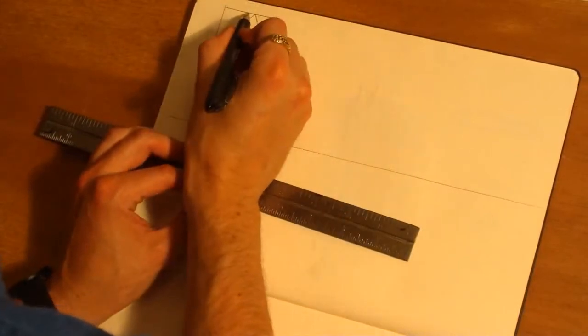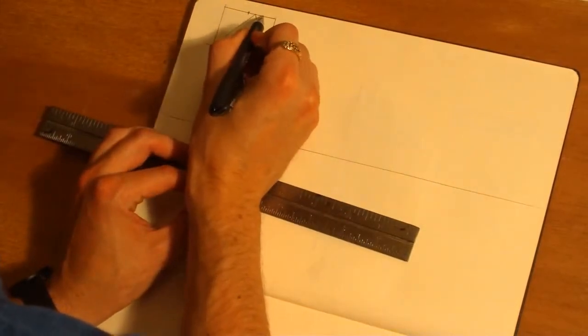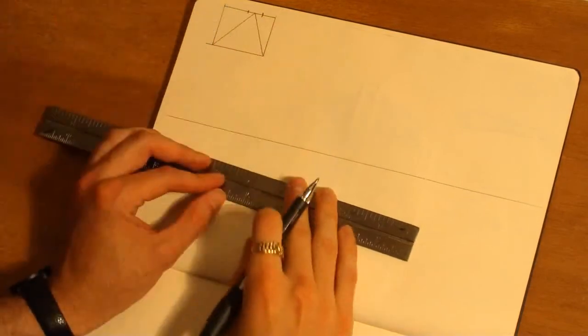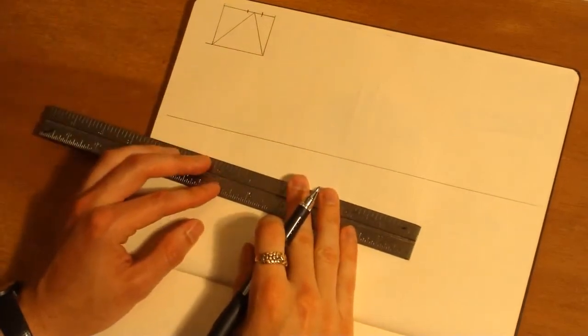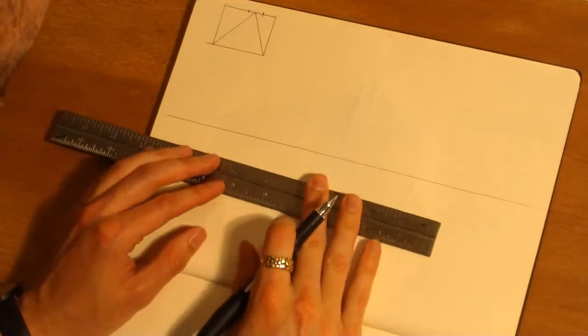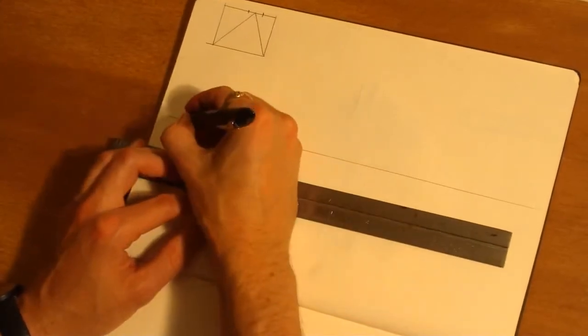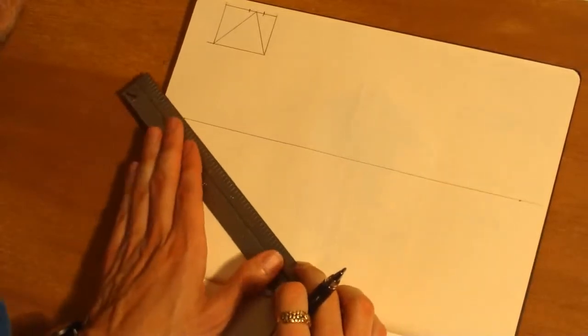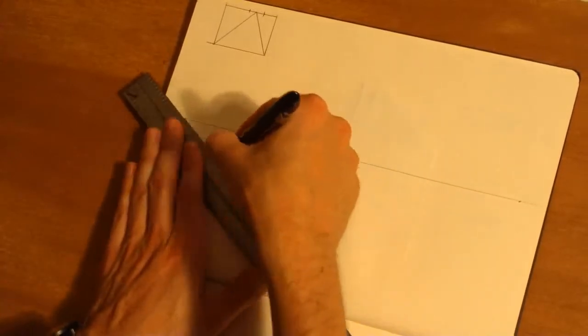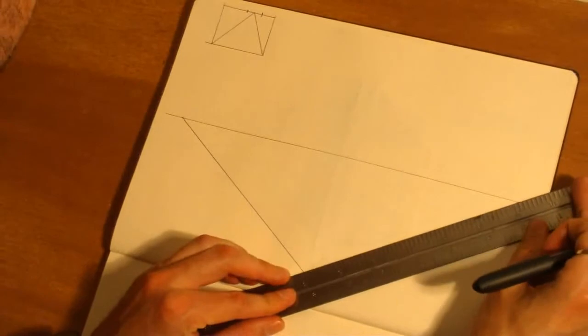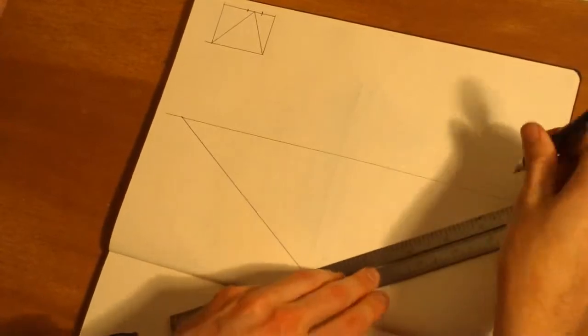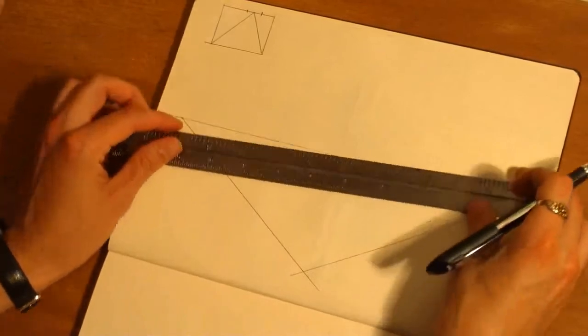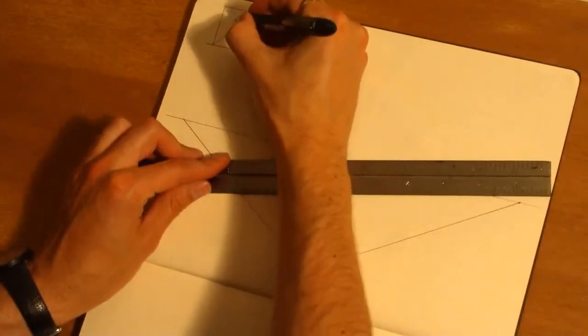So you can see the half is about here, the quarter is about there, so somewhere between half and a quarter, and you can roughly estimate that once you subdivide. So two vanishing points and then ground plane.